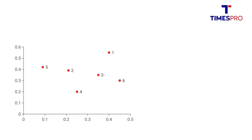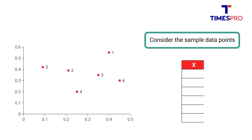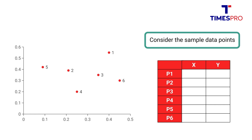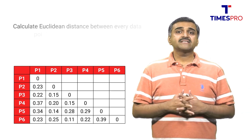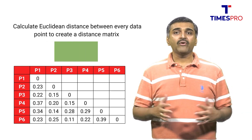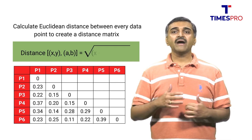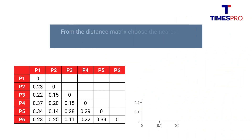Let's apply agglomerative clustering on a sample dataset. We have two features X and Y, and here is a plot between X and Y. We calculate the Euclidean distance between every data point to create a distance matrix. Here is our distance matrix, which contains the distance between every pair of data points. The Euclidean distance between two points (X, Y) and (A, B) is given by the square root of (X minus A) squared plus (Y minus B) squared.